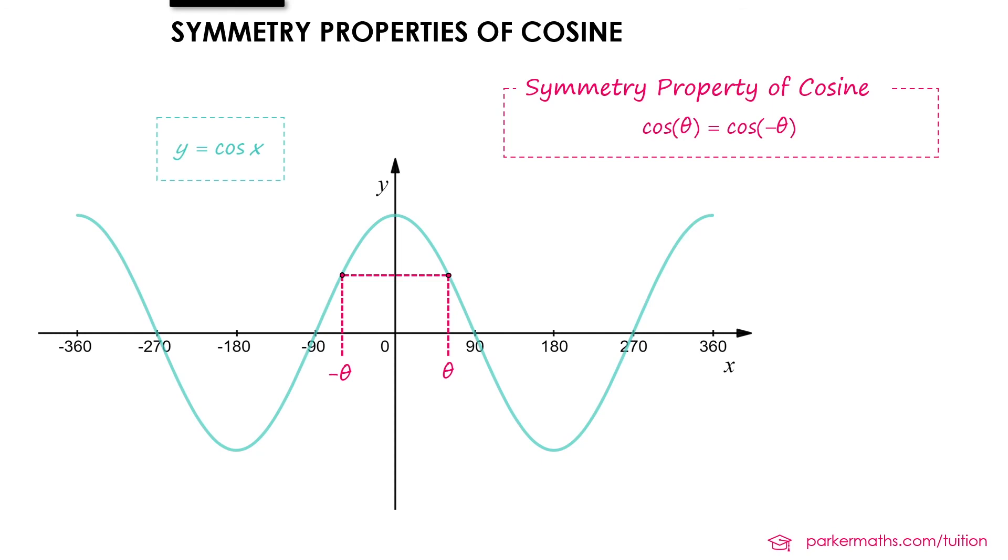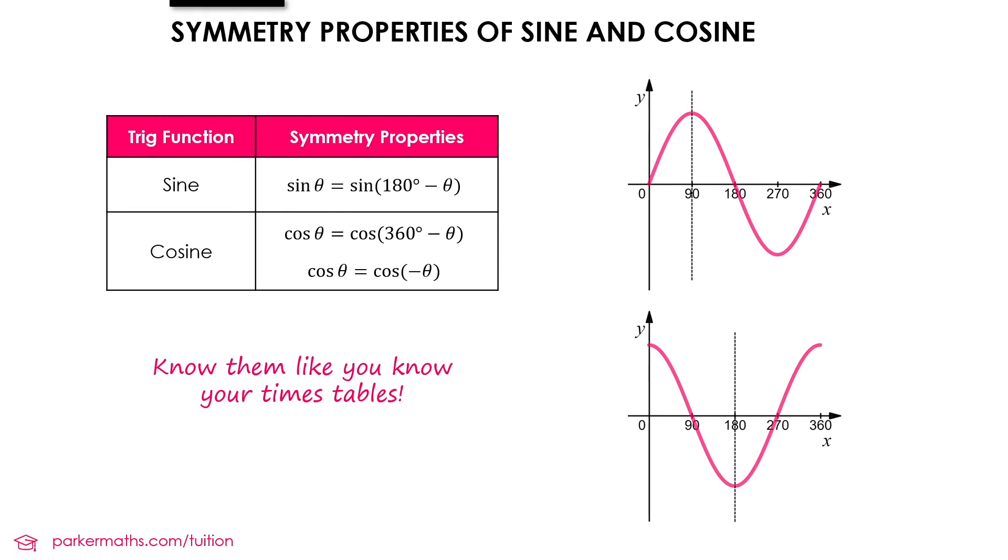So just as a summary, we have one symmetry property we need to remember for sine and two for cosine. And the best piece of advice that I could give with these is know them like you know your times tables. If you can recall them without thinking about it, it will make a lot of the trigonometry that we do seem a lot easier.